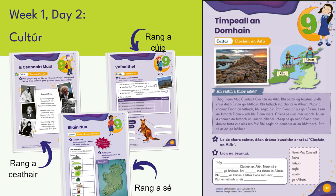Find out the culture topic for the month. Tease it out with questions like: Cár dó seo? Cár bhfuil an áit seo? An bhfaca tú an áit seo riamh? Cár dó? Then complete the skills book activity on the culture page with the children. For example, let's look at skills book page 37. The culture topic is Clochán an Aifir, the Giant's Causeway.